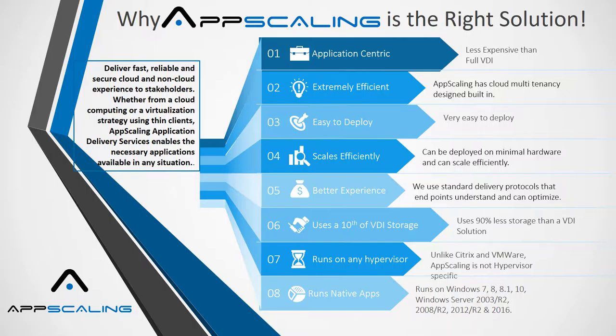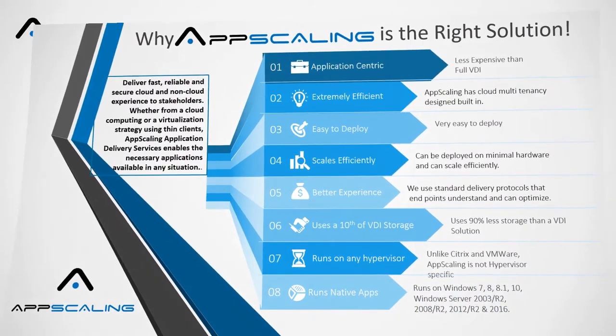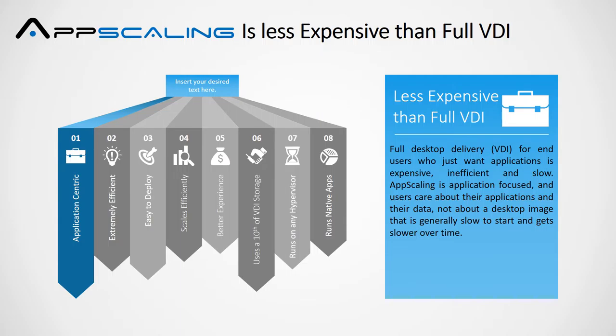Once again — run Windows 7 apps on a Windows 7 box in a Windows 7 environment that's supported by Windows 7. App Scaling is less expensive than full VDI. Full desktop delivery VDI for end users who just want applications is expensive, inefficient, and slow.